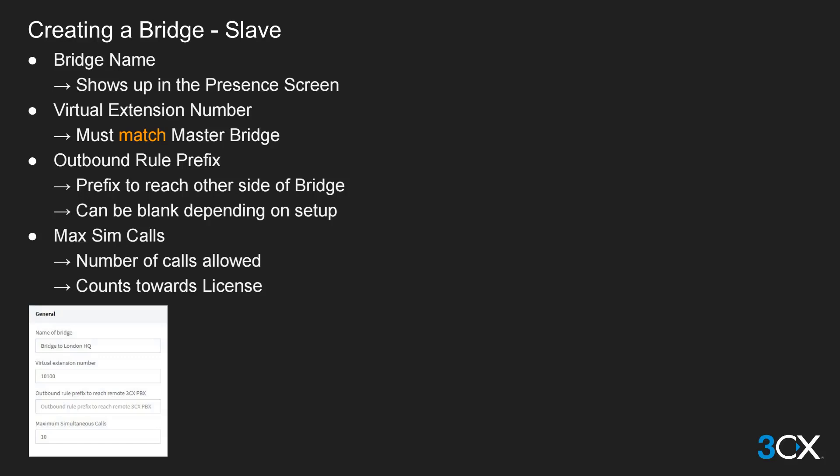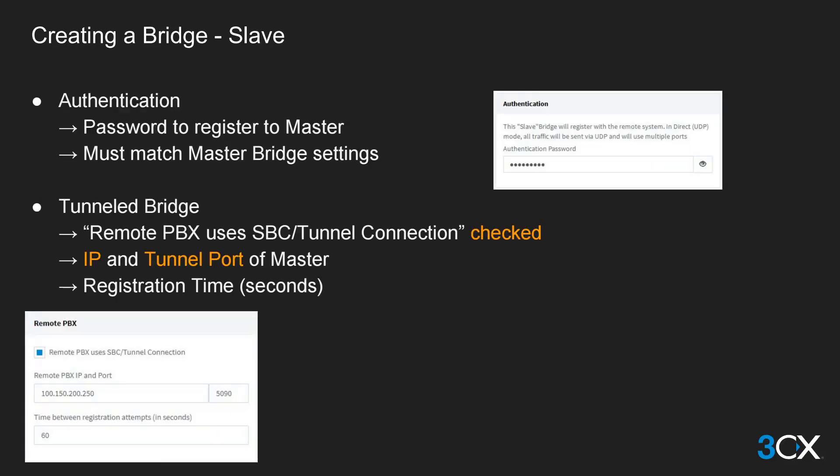Calls traversing the bridge will count towards your license usage on both PBXs. In the authentication section you will need to copy the password from the master bridge PBX — this password will be used to authenticate the slave to the master. If you are using the tunnel protocol, enter the IP address of the master PBX and its tunnel port in the remote PBX section. The time between registration attempts shows the interval in seconds at which the slave bridge PBX will send a new register attempt to the master.